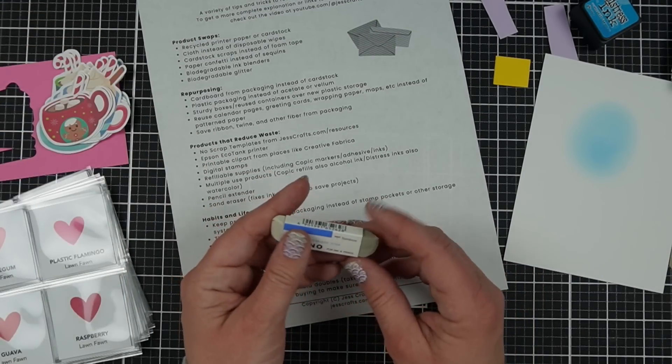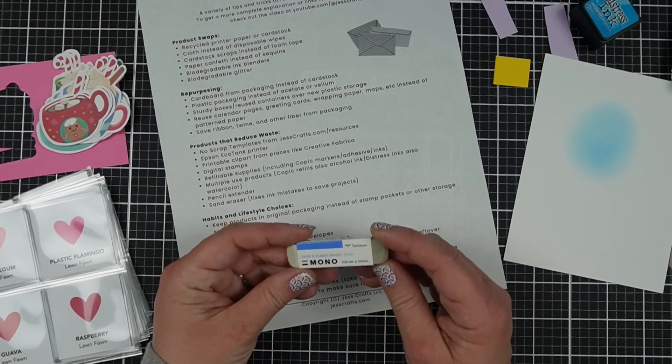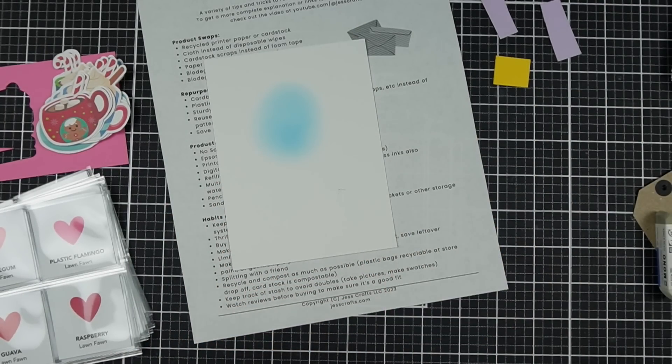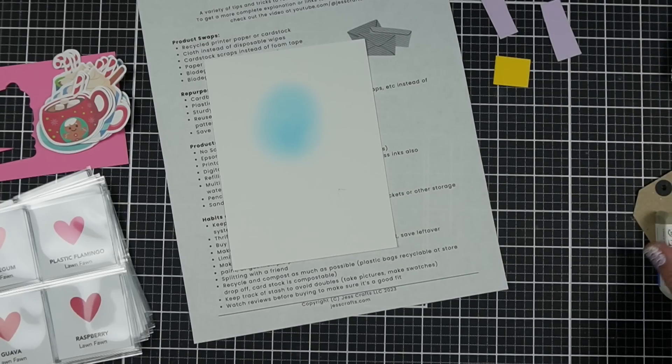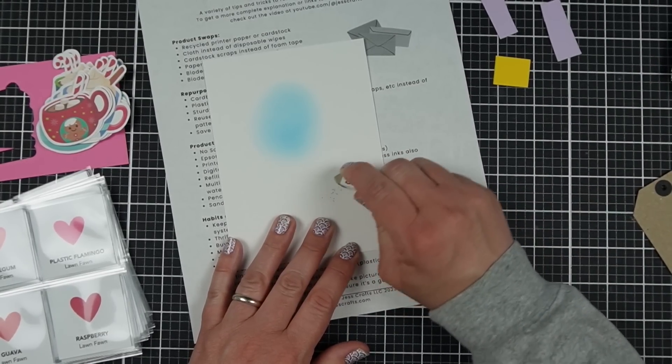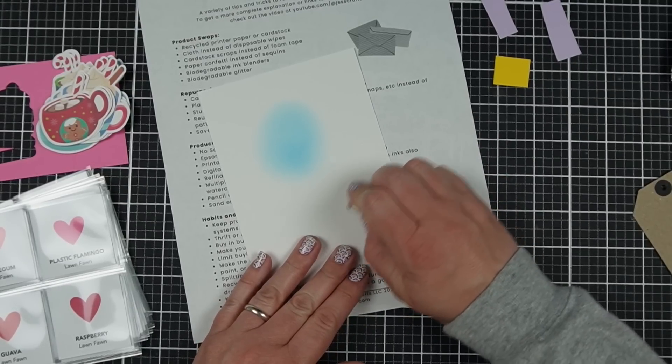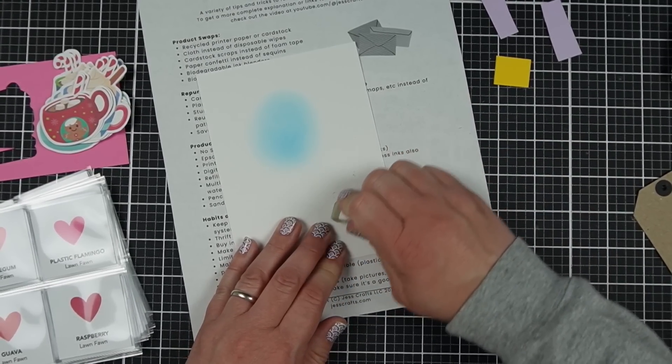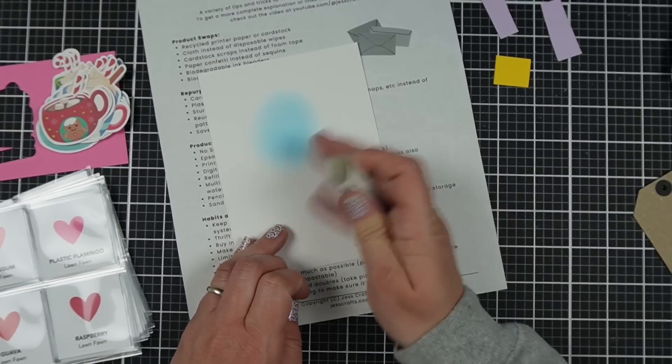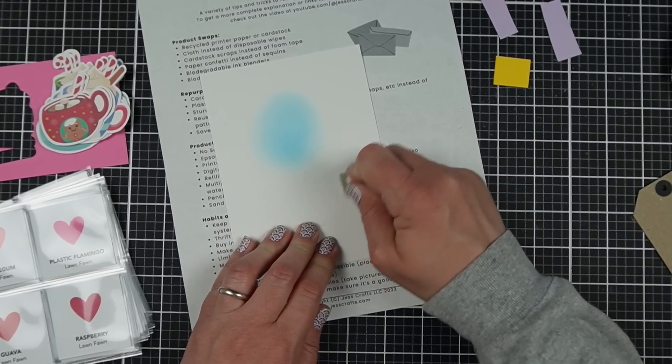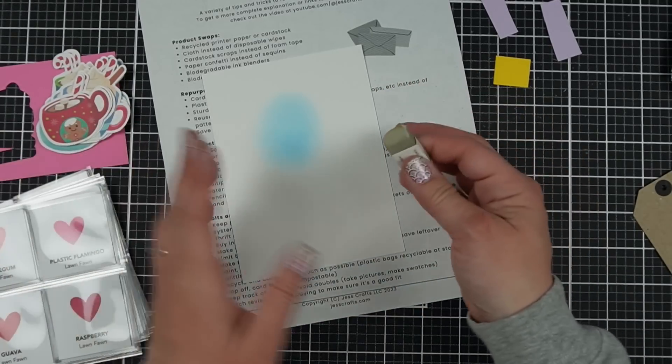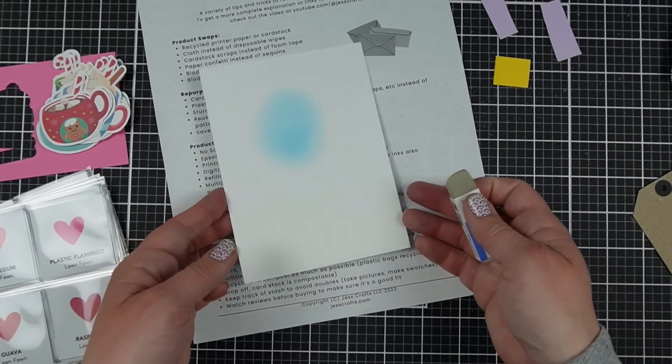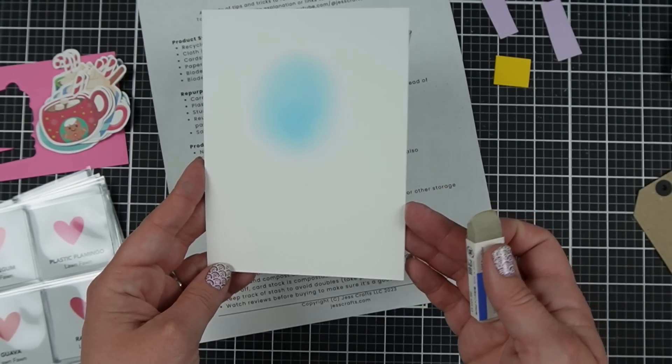Sand erasers. This one's a little bit maybe not as obvious, but with the sand eraser, sometimes it allows you to erase a little dab of ink. I'll see if I can demonstrate it quickly. It's probably not going to do a perfect job. But if I got some ink where I didn't want it, I can kind of erase it away. I can, I think in addition to this, like adding a little die cut on top of it. But these can save a project. So now I don't have to throw away the whole project because my sand eraser has saved the day. Hopefully you could see that it was there and now it is much, much more faded.